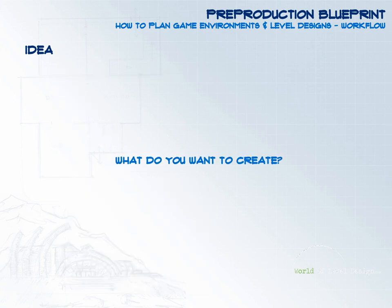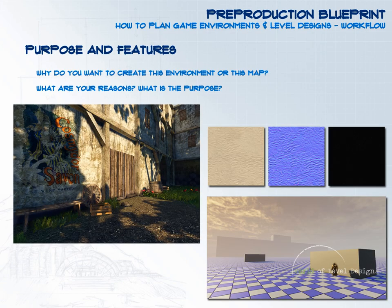The key question you want to ask is: what do you want to create? Once you have an idea, you want to define a purpose and a set of features for your environment. This is why you want to create this environment or map — what are the reasons, what is the purpose? For example, you may want to create an environment to explore, as a portfolio piece, or to improve a certain process like texturing, lighting, or blocking in. Whatever your purpose is, it will help you drive the entire production stage and give you a reason to complete your environment.